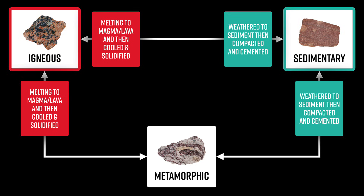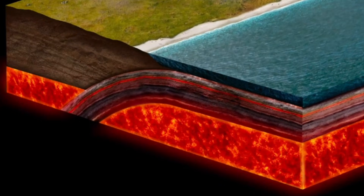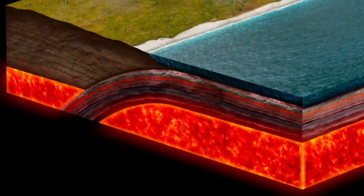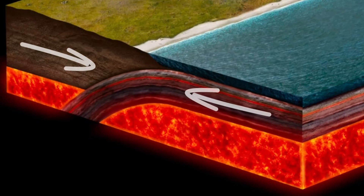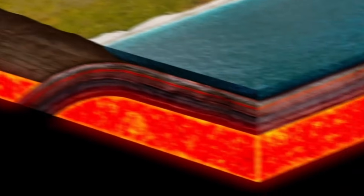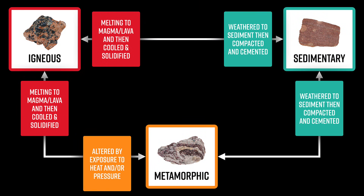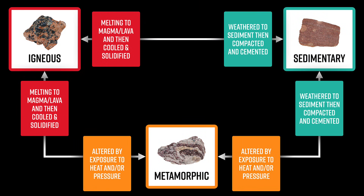Finally, let's look at how metamorphic rocks form. As we mentioned, metamorphic rocks form often underground as a result of the movement of Earth's tectonic plates, generating immense heat and pressure that changes rocks into a metamorphic rock. And of course, that can happen with igneous rocks or sedimentary rocks — they can be altered or changed by exposure to intense heat and/or pressure underground.